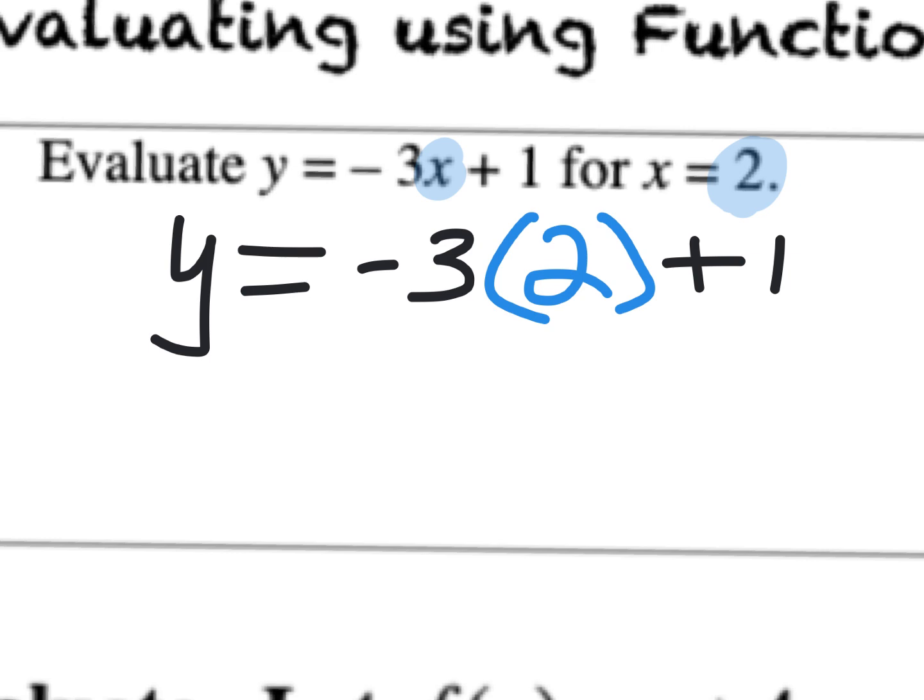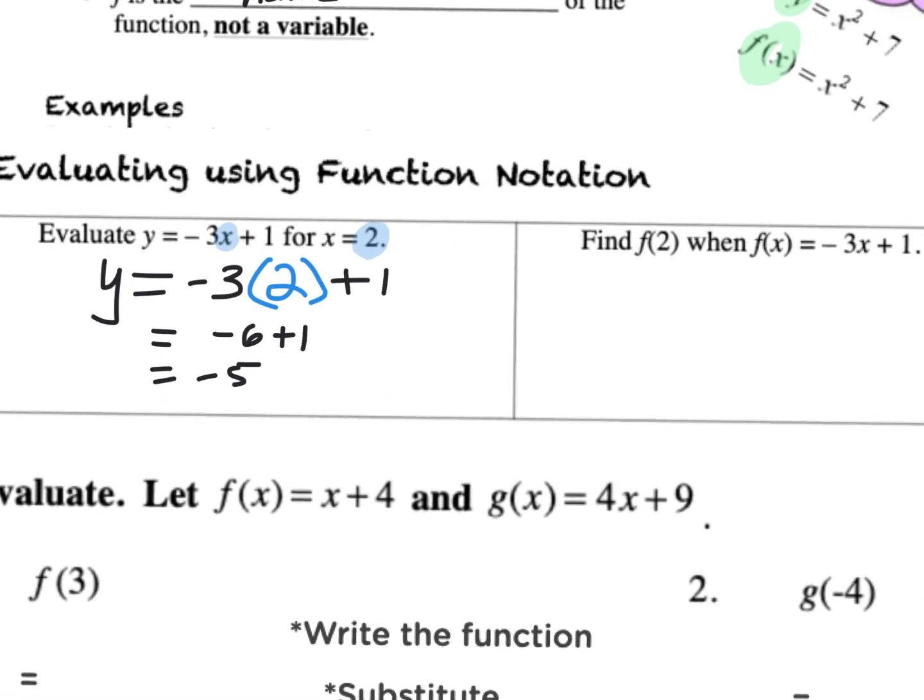So this just means take the X out, substitute it with a 2, and then the word evaluate - going back to Ren's excellent question yesterday, how do you know if you're multiplying or doing this? It'll say evaluate instead of solve. Negative 3 times 2 is negative 6, plus 1 is negative 5. So you're used to seeing a problem like this. The function notation version looks like this. Instead of saying Y equals, it says F of X equals.